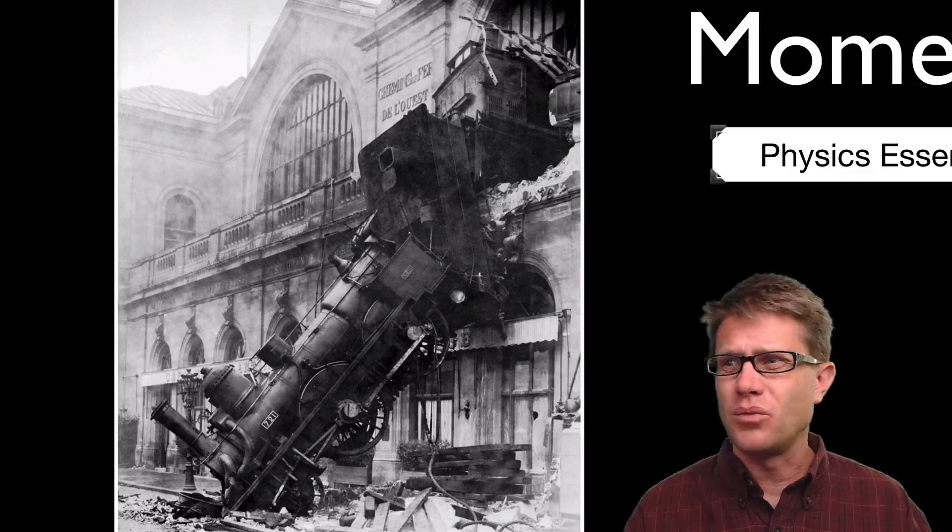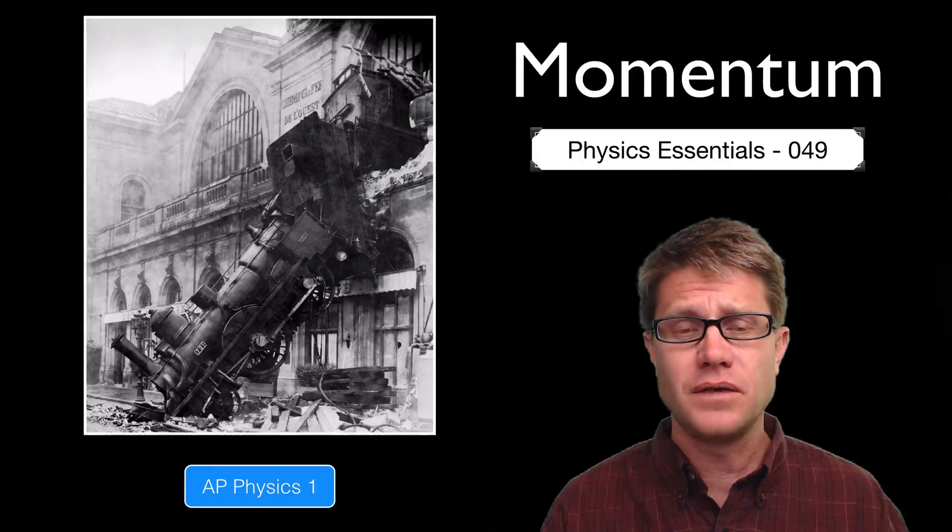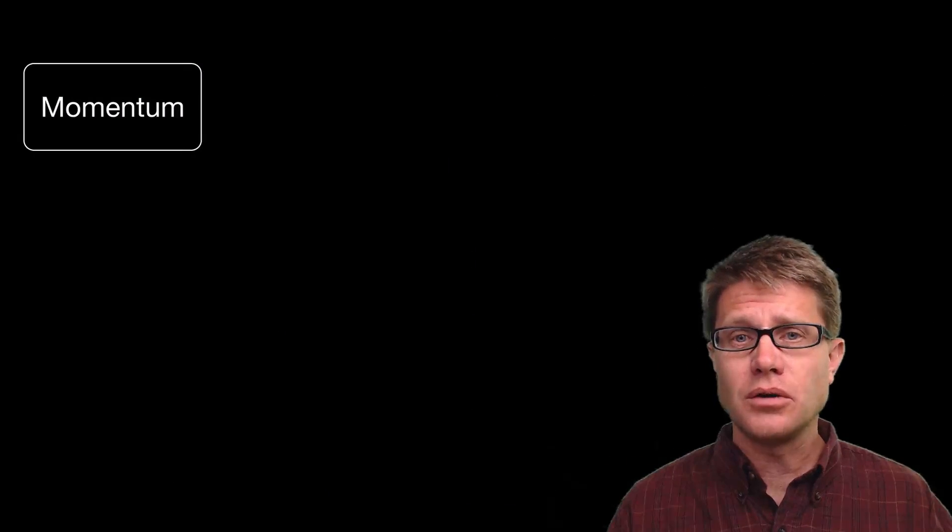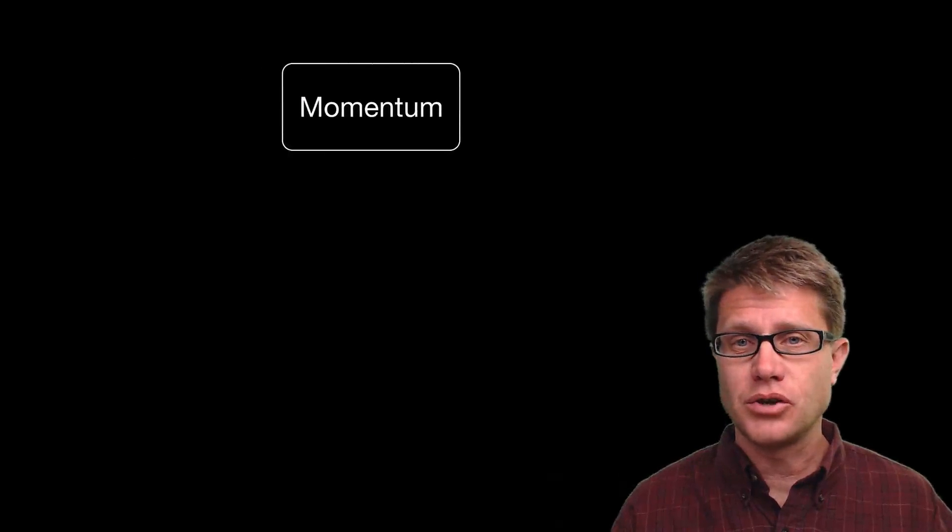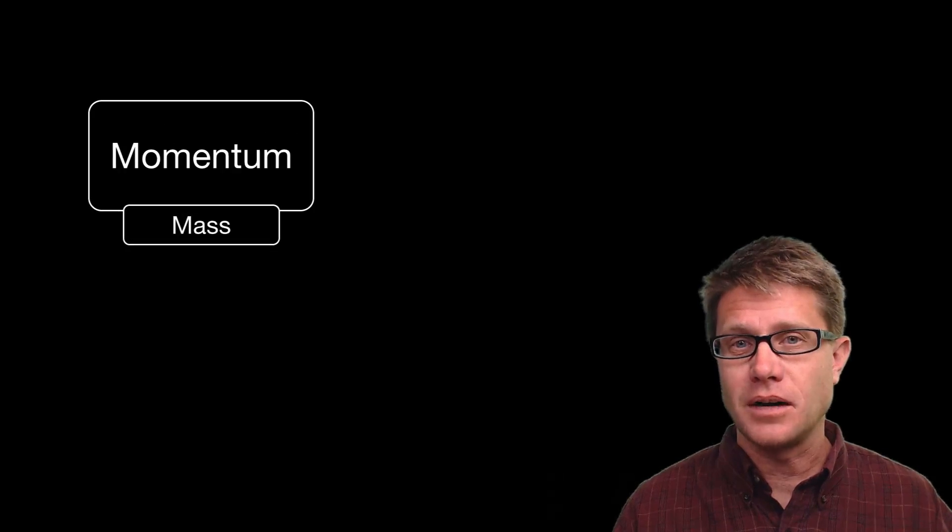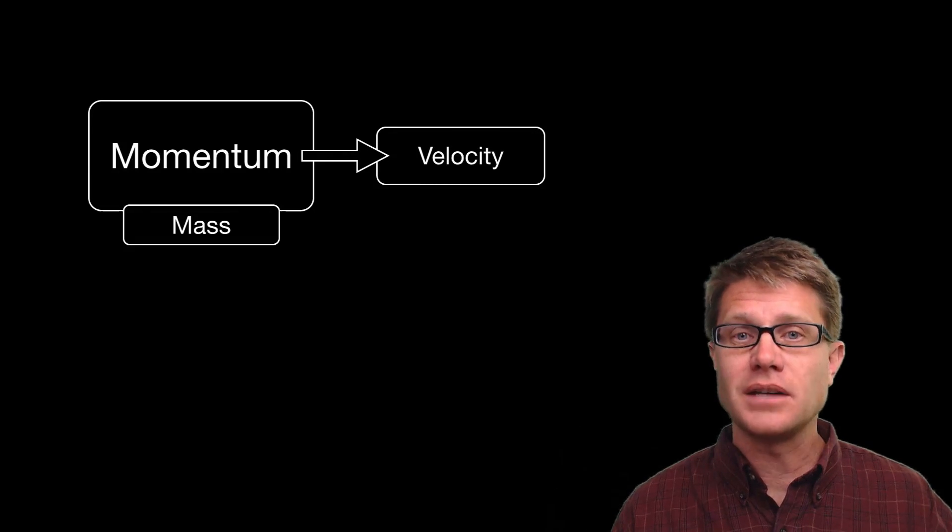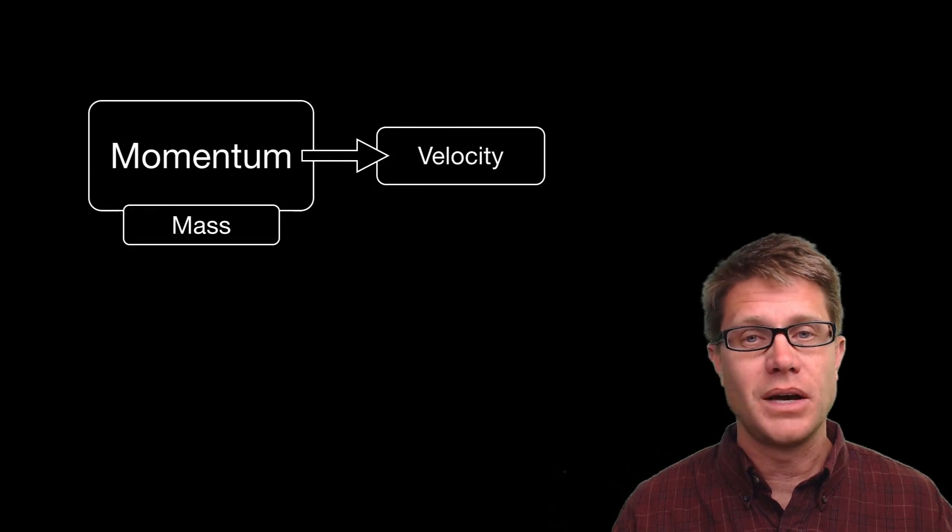And if you were to ask somebody what is momentum, they will probably come up with a pretty good definition that would fit in physics. Momentum is always going to occur if we have an object that is in motion. And if you want to calculate it you simply multiply the mass of the object times the velocity of the object. The greater the mass, the greater the velocity, the greater the momentum is going to be.